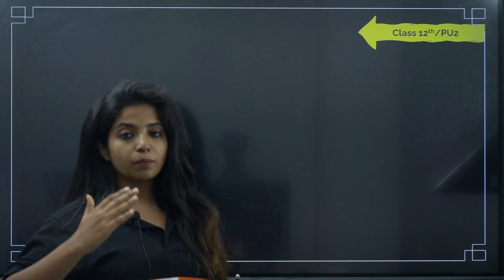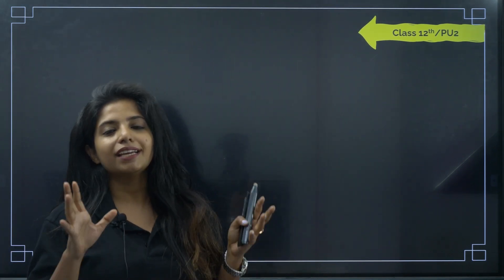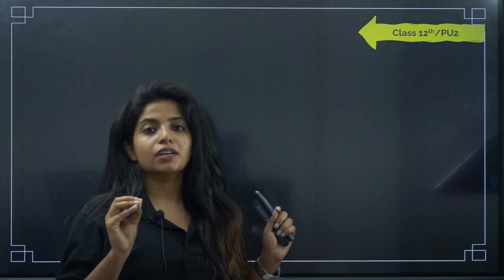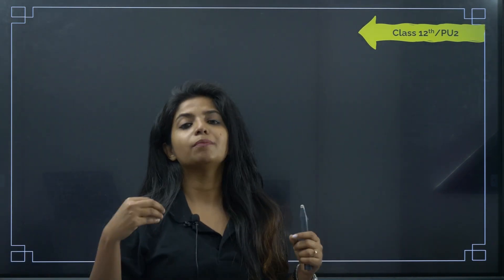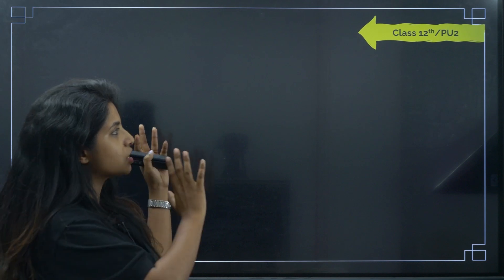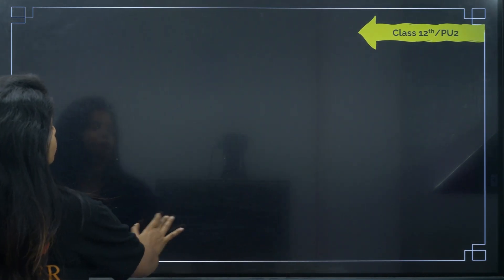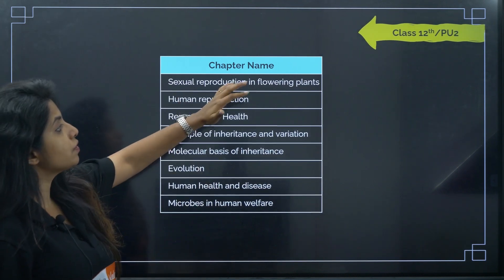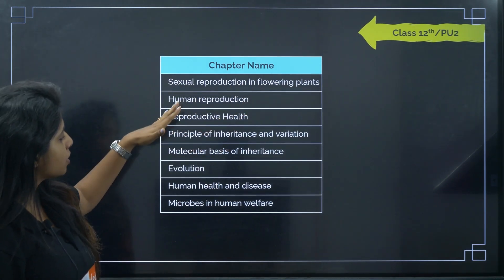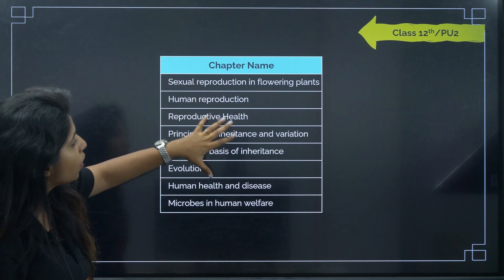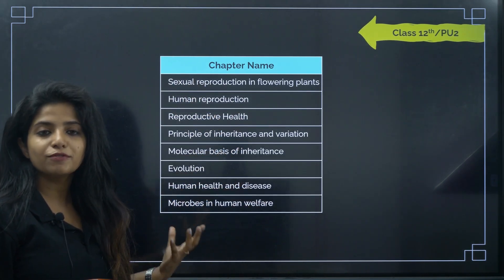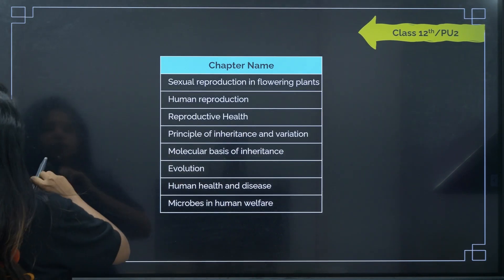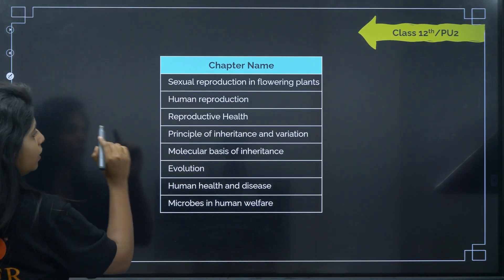First, I'll talk about the chapters in 12th standard. In Karnataka it's called PU2 — class 12th and PU2 are the same thing. The chapters start with sexual reproduction in flowering plants, going up to human reproduction, microbes in human welfare, and many more important chapters.